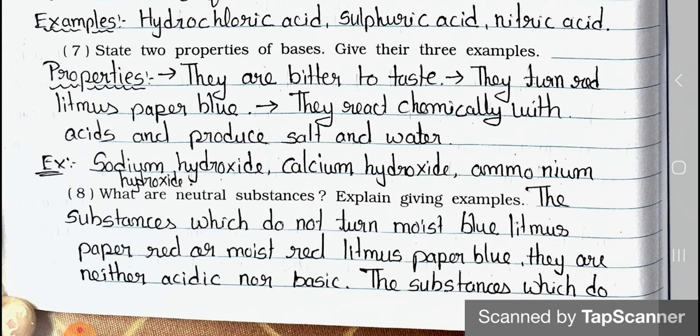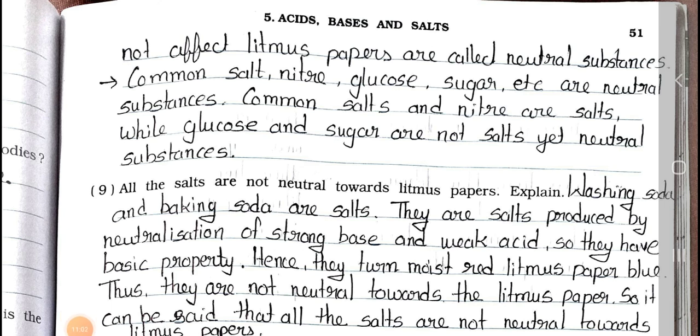Question number 8: What are neutral substances? Explain giving an example. Answer: The substances which do not turn moist blue litmus paper red or moist red litmus paper blue are neither acidic nor basic. The substances which do not affect litmus papers are called neutral substances. Common salt, nitrite, glucose, sugar, etc. are neutral substances. Common salt and nitrite are salts while glucose and sugar are not salts, yet they are neutral substances.